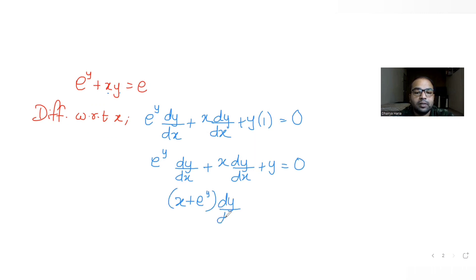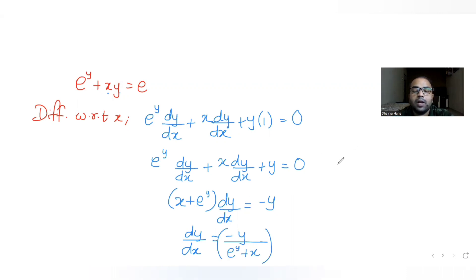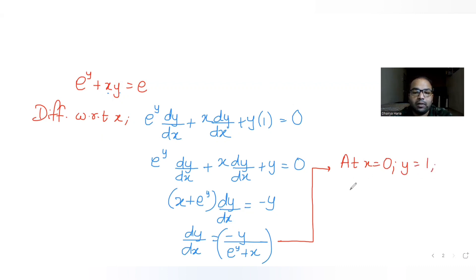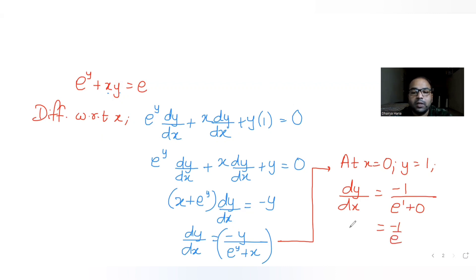Factoring out dy/dx: (x + e^y)·(dy/dx) = −y, so dy/dx = −y / (e^y + x). At x = 0 and y = 1, dy/dx becomes −1 / (e^1 + 0), which equals −1/e.